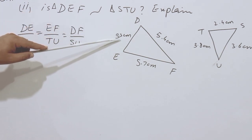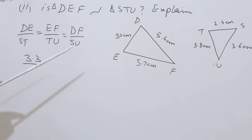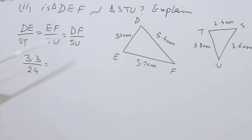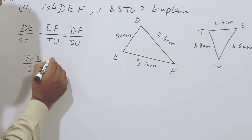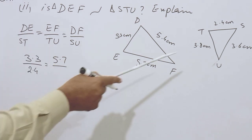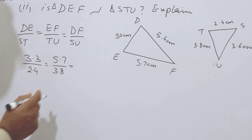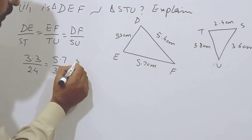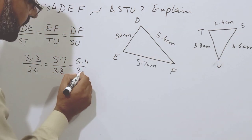DE is 3.3 cm, so I will write 3.3 over ST which is 2.4, so I write over 2.4. EF has value 5.7, so I write 5.7 over TU. The value of TU is 3.8, so I write it over 3.8. Then DF has value 5.4 over SU which is 3.6, so it is written as 5.4 over 3.6.